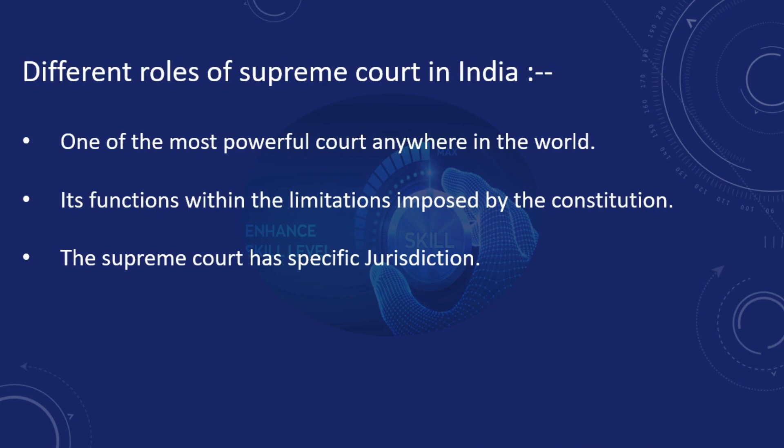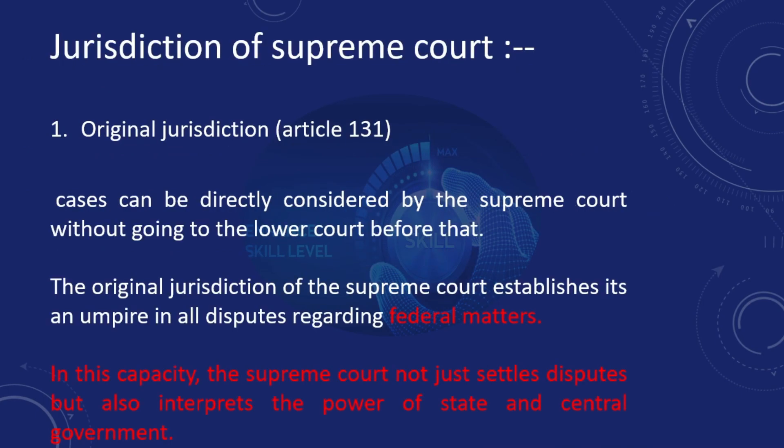The Supreme Court has specific jurisdiction, which we can say is simply the scope of powers. The first jurisdiction of the Supreme Court is original jurisdiction, which is entertained under Article 131 provided in the constitution. Cases that can be directly considered by the Supreme Court without going to a lower court come under original jurisdiction.